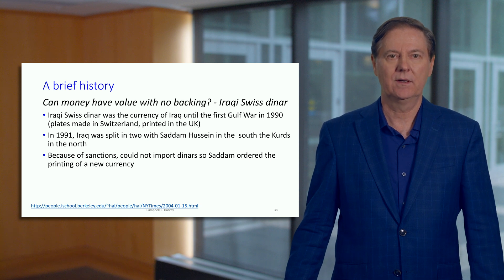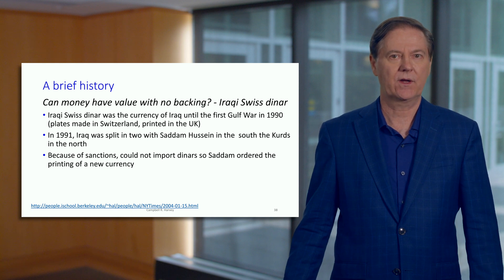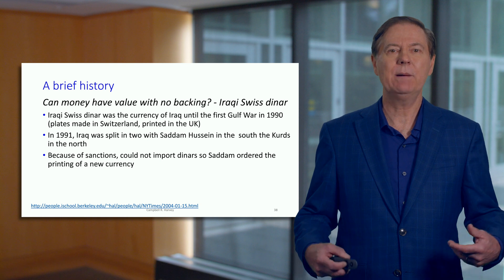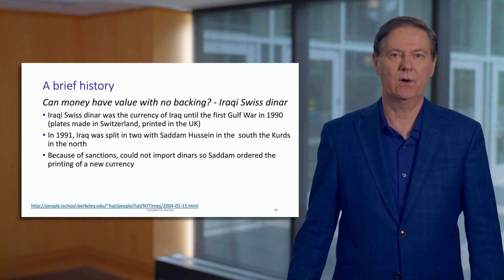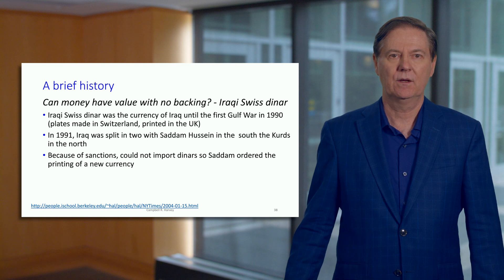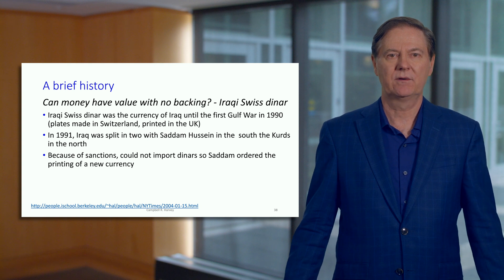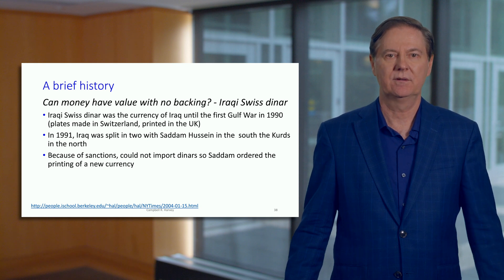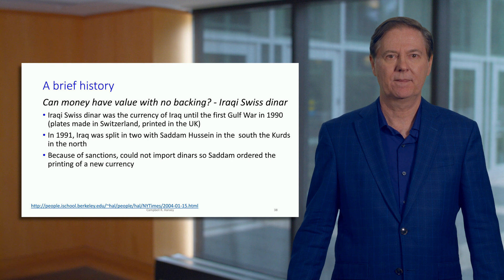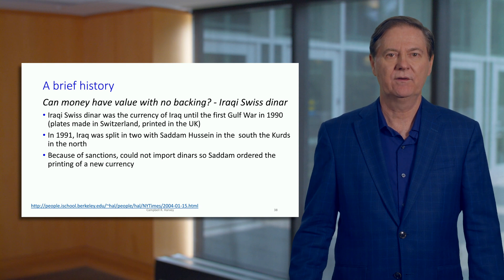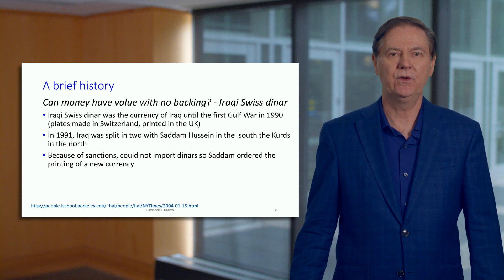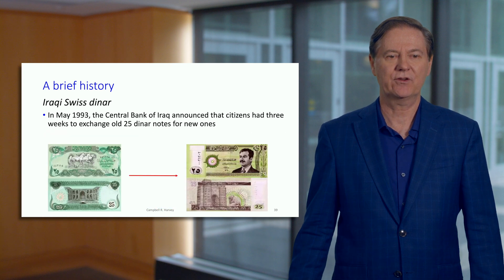In the south, Saddam Hussein controlled Iraq, and in the north, the Kurds. A number of sanctions were imposed on Iraq. One issue with the sanctions was that it was impossible for the UK to export the freshly printed dinars to Iraq. So Saddam Hussein had to scramble and develop his own printing facility in Iraq to print a new currency.